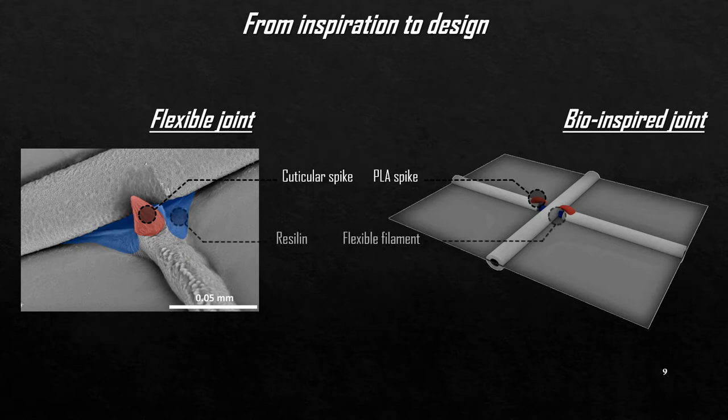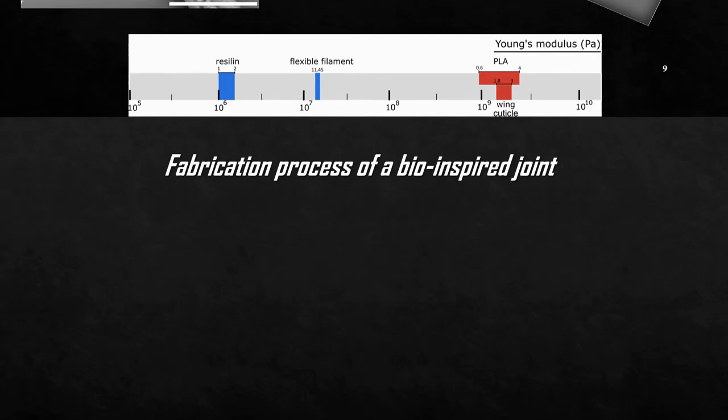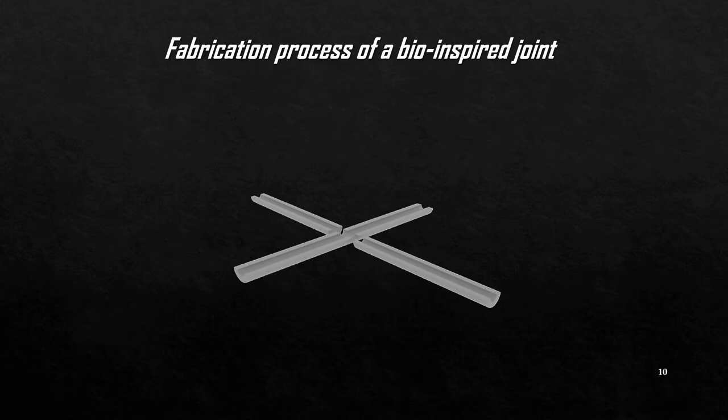We chose PLA spikes to represent cuticle and flexible filament to represent the resilin. This choice was made because of the similarity of the material properties, in particular the elastic modulus of the selected materials with their natural counterparts. Here, you can see how we fabricated or 3D printed the joints. 3D printing was done in four steps.